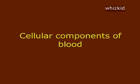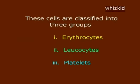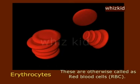The cellular components of blood are classified into three groups: erythrocytes, leukocytes, and platelets. Erythrocytes are otherwise called red blood cells or RBCs.